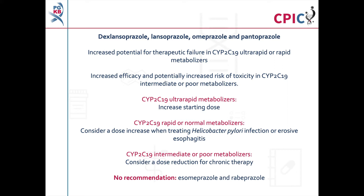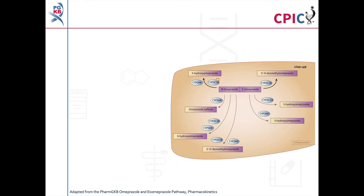The guideline also assigns no recommendation to esomeprazole and rabeprazole. This image is adapted from the PharmGKB omeprazole and esomeprazole pathway. A link to the original pathway is provided in the description below this video. Omeprazole is used here as an example of the interaction between CYP2C19 and PPIs.